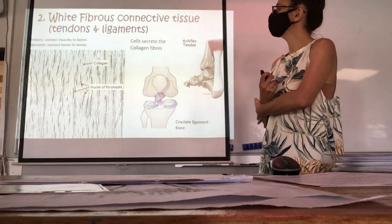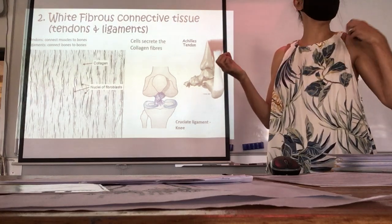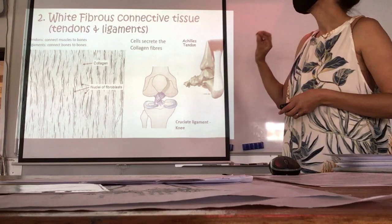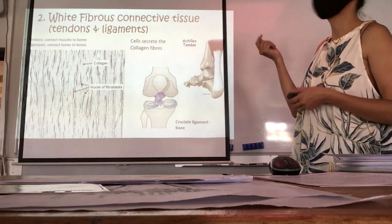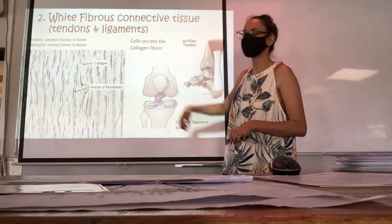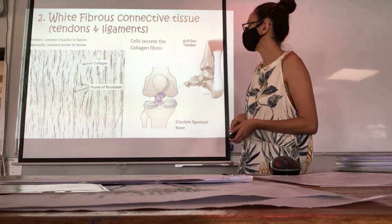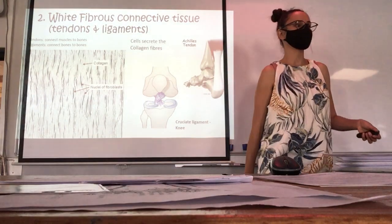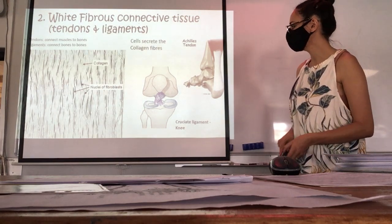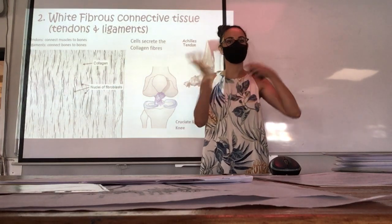Now we're looking at white fibrous connective tissue — broken down into tendons and ligaments. Tendons connect muscles to bones; ligaments connect bones to bones. You guys discussed this yesterday. The cells secrete collagen fibers, so this tissue has more collagen than elastic — though it still has some elastic. An example: the Achilles tendon at the back of the ankle, and a ligament within the knee.